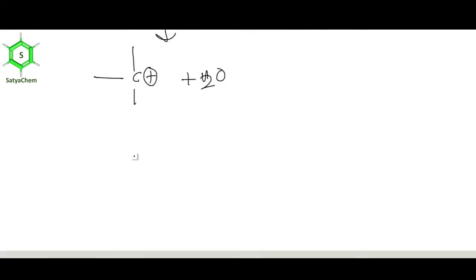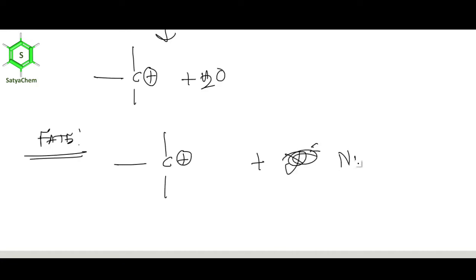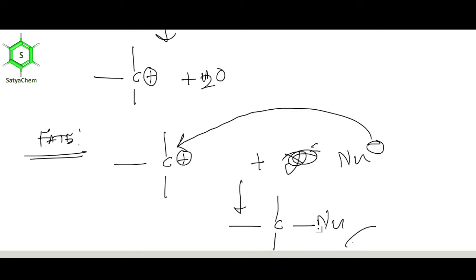What is the fate of this carbocation? It is important because carbocations are very reactive. If you have generated a carbocation and there is a nucleophile in the system, the nucleophile will attack the carbocation and form a new bond. This is the fate of carbocations — they are very short-lived and have a high tendency to react with negatively charged species like nucleophiles or bases. Isolation of carbocations is very difficult.